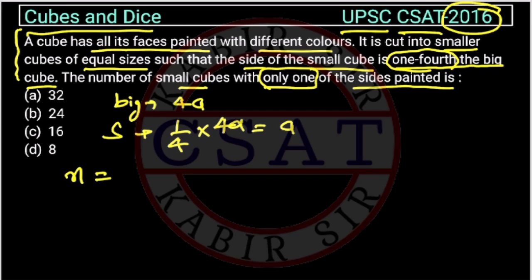So what will be n? n will be the side of the bigger cube upon the side of the smaller cube. That is 4a upon a, so n will be 4.